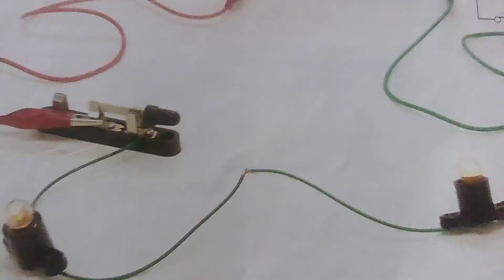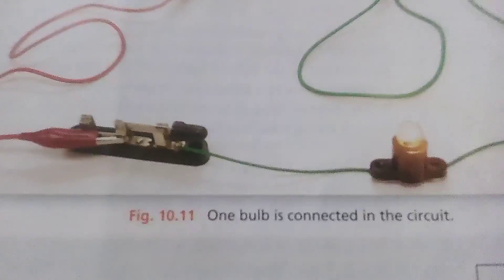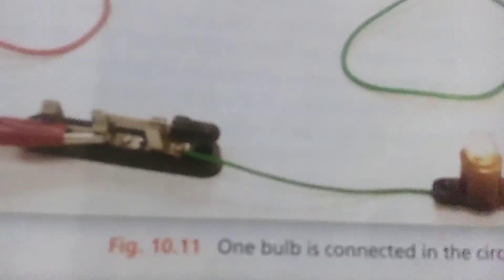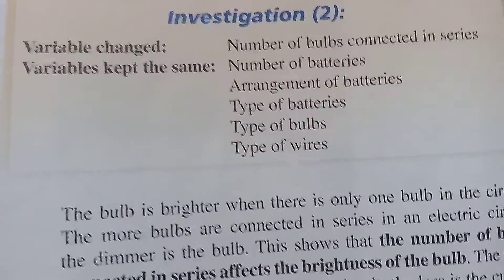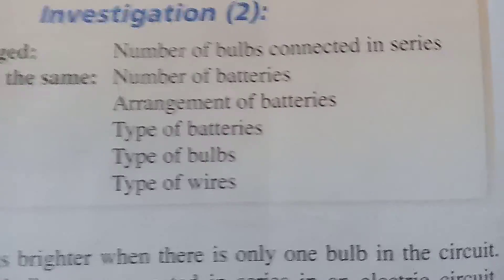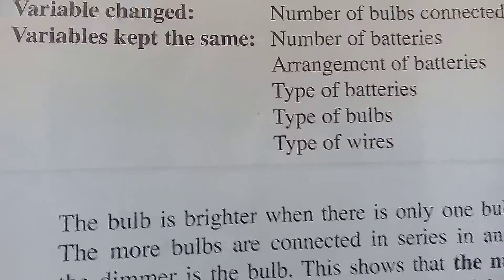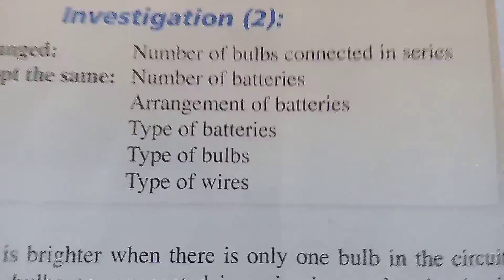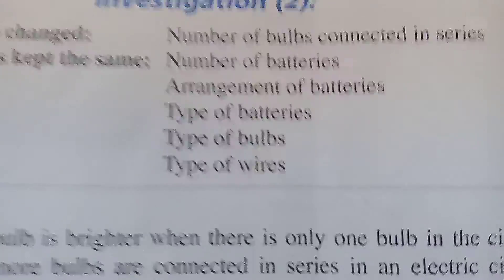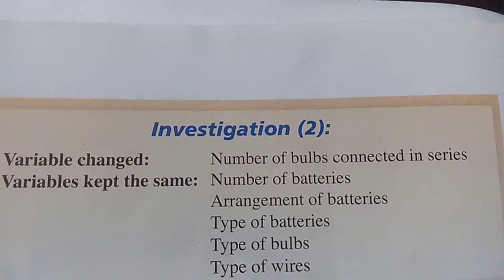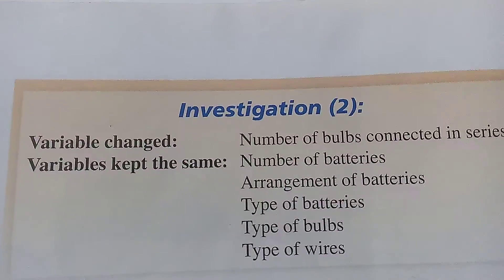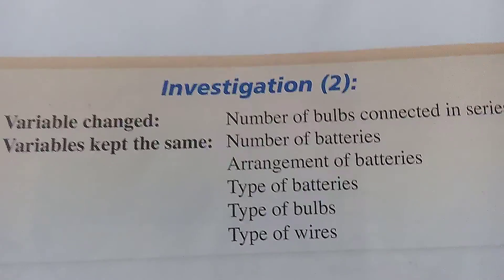But when there were two bulbs attached, the light was dimmer. When the current is divided between two bulbs, both bulbs light up but are less bright. We changed only one variable — the number of bulbs — first one, then two. The variables kept the same were the number of batteries, arrangement in series, type of battery, type of bulb, and type of wires. We conclude that the number of bulbs connected in series affects the brightness of the bulb.